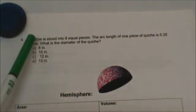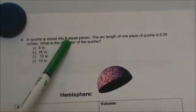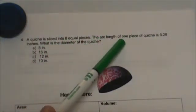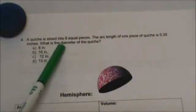A quiche is sliced into 8 equal slices. The arc length of one piece of quiche is 6.28 inches. What is the diameter?